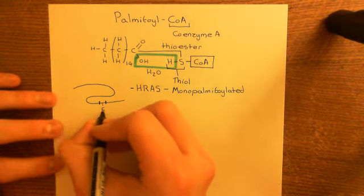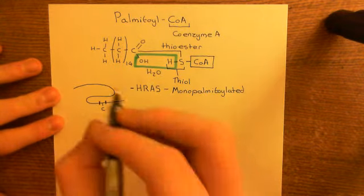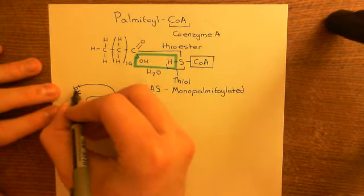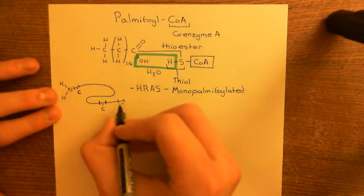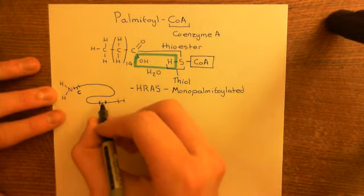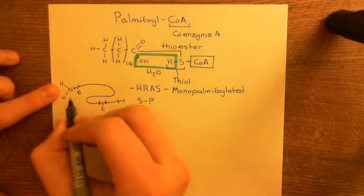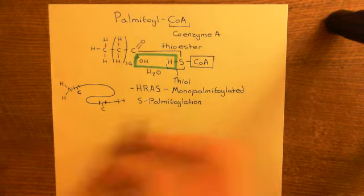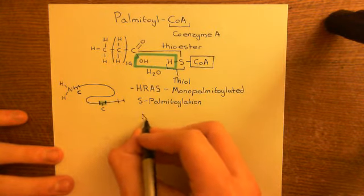The cysteine residues chosen for S-palmitoylation are within the middle of the polypeptide. N-palmitoylation, the other form, occurs when you have a cysteine residue right at the beginning of the polypeptide. All our RAS proteins have cysteine residues at their end after post-prenylation modifications, but the cysteines being palmitoylated now are in the middle of the polypeptide — hence S-palmitoylation.